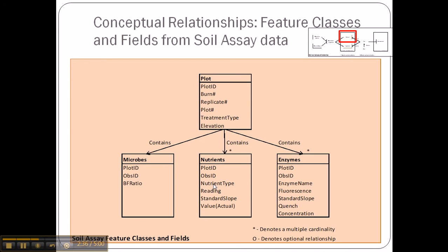I broke the data up into three main types: nutrients — which includes nitrogen, phosphorus, and pH — with the different fields corresponding to what's necessary to calculate the concentration of these nutrients. Separated from the nutrients are biotic variables, which include extracellular enzyme concentration — an indicator of nutrient cycling throughout the system, often produced by bacteria — and microbes, specifically the bacteria-to-fungal ratio.